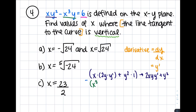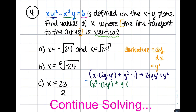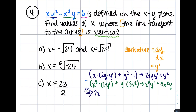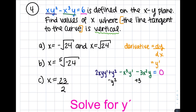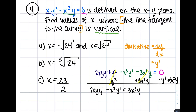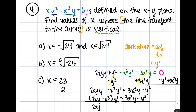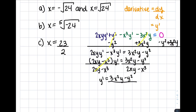Next, we do the same thing for x cubed times y. When putting these pieces together, don't forget your negative — it needs to be distributed. For the third piece, the 6, the derivative of a constant is just 0. The goal is to solve for y prime, so we'll do some algebra to get y prime alone. You should end up with y prime equals 3x squared y minus y squared, all over 2xy minus x cubed.